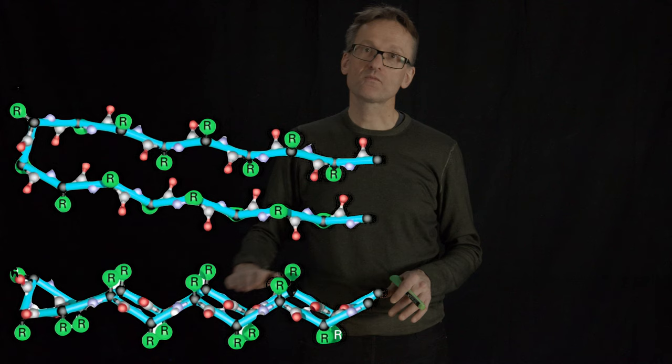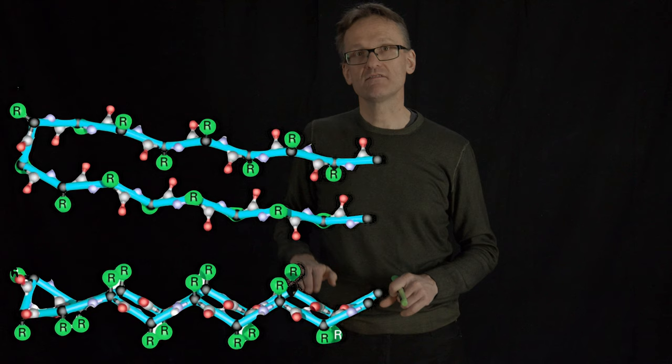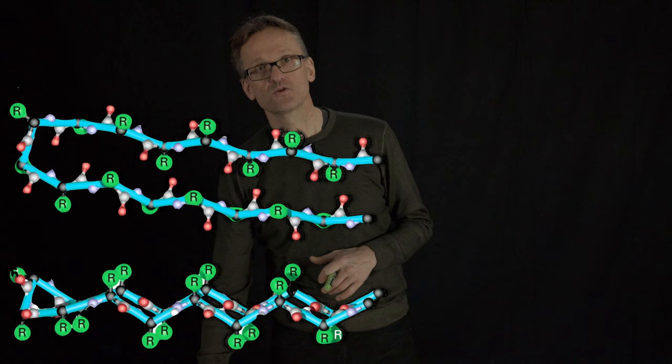And if you now pick amino acids with one property here and another property here, I have effectively created a divider here. A divider that will have property A here and property B here.